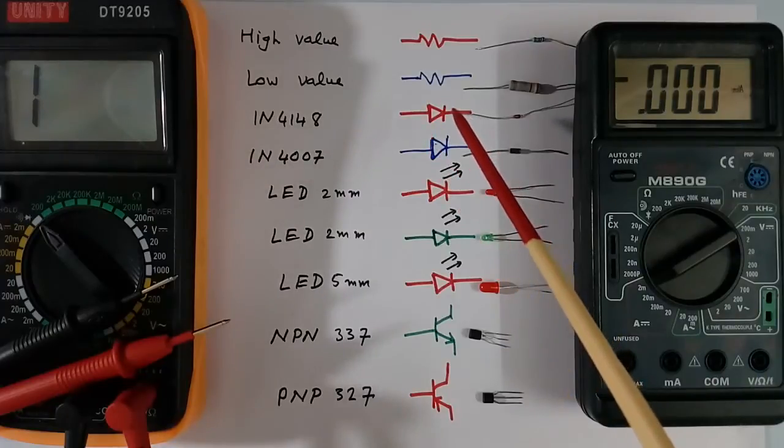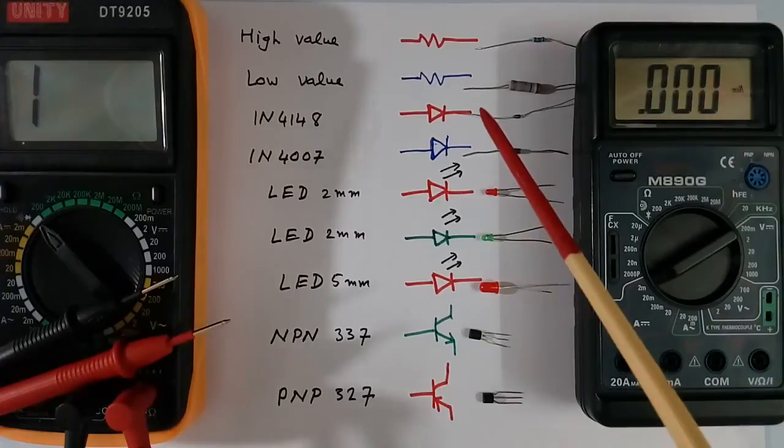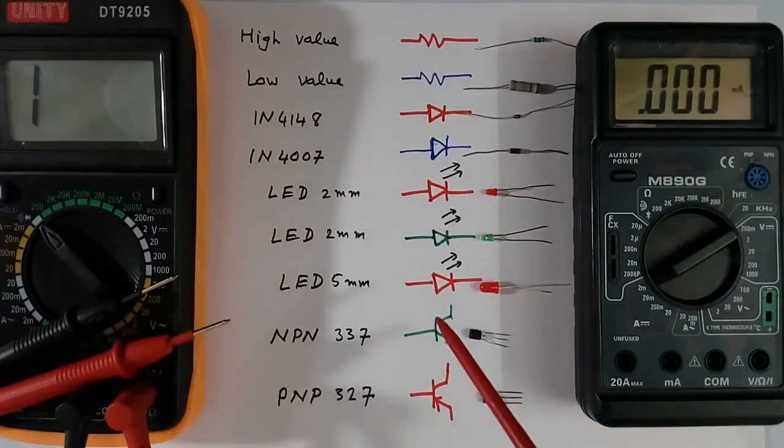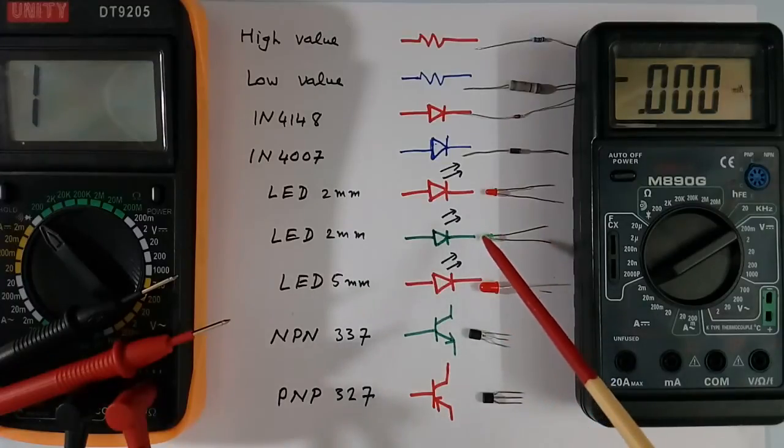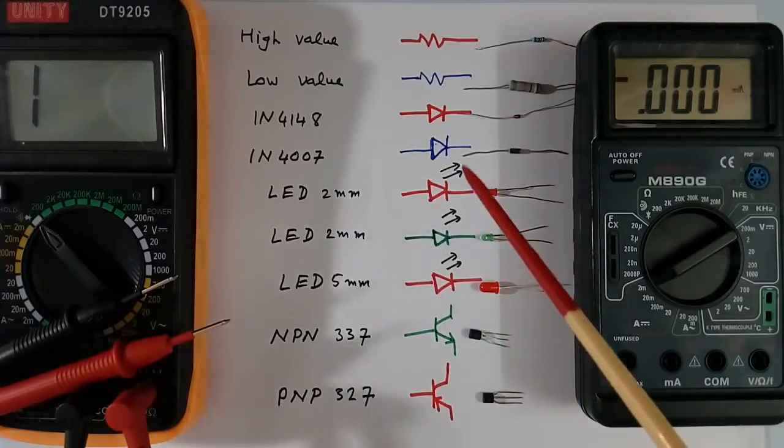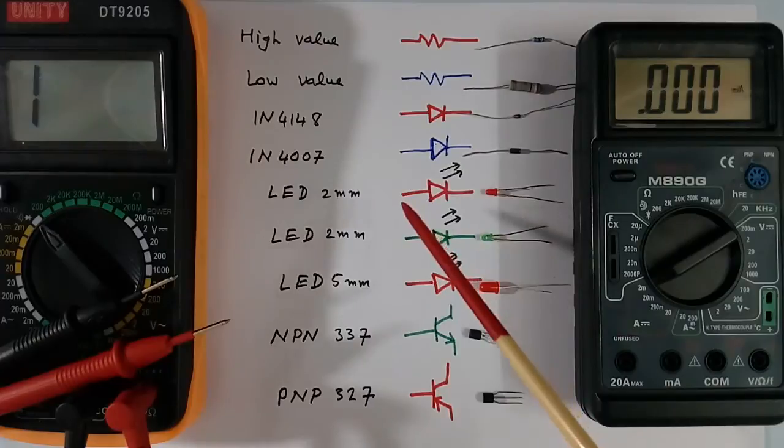Then I have one signal diode. Then I have another power supply diode. Then there are 3 LEDs. These are small size LEDs. This is big 5 mm LED. This is green color LED. So for these 5 LEDs and diodes, 2 diodes and 3 LEDs, I will measure the diode drop.